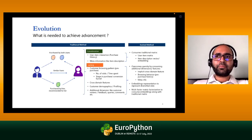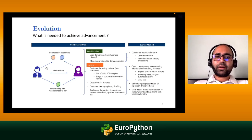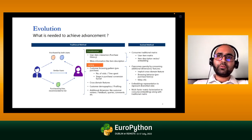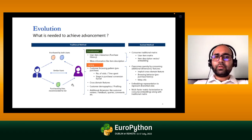Current systems try to utilize historical transaction information where a person has purchased or reviewed something. They match it against different customers who have similar attributes and try to propose items of similar taste. They find similarity between two customers and recommend something not yet used by customer A but potentially useful, because customer A and B share some similarity. That's how the traditional method works.